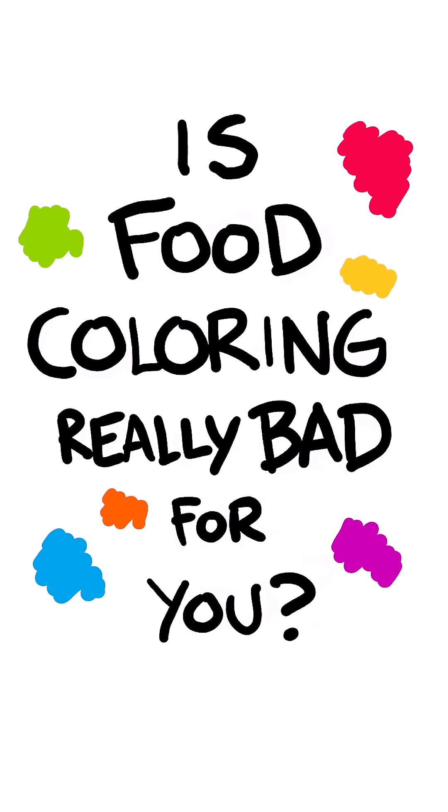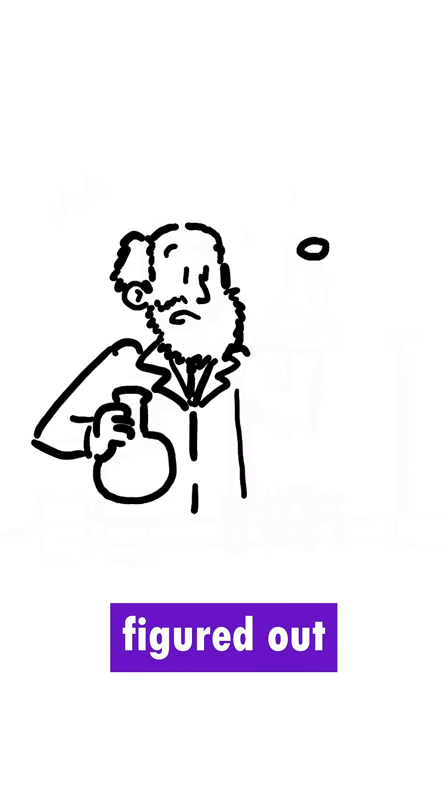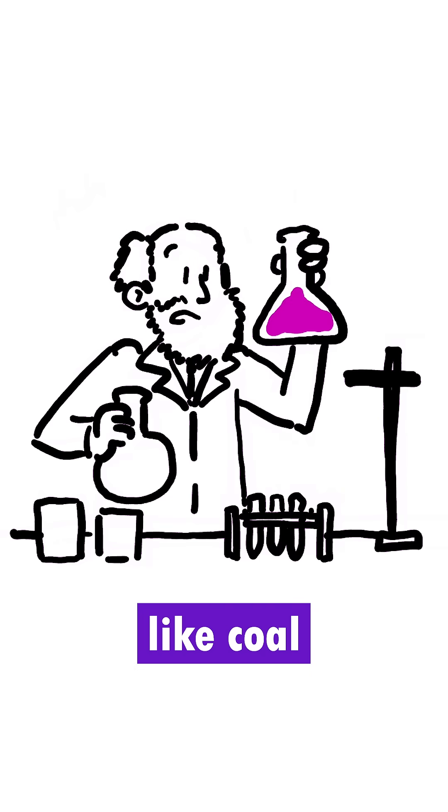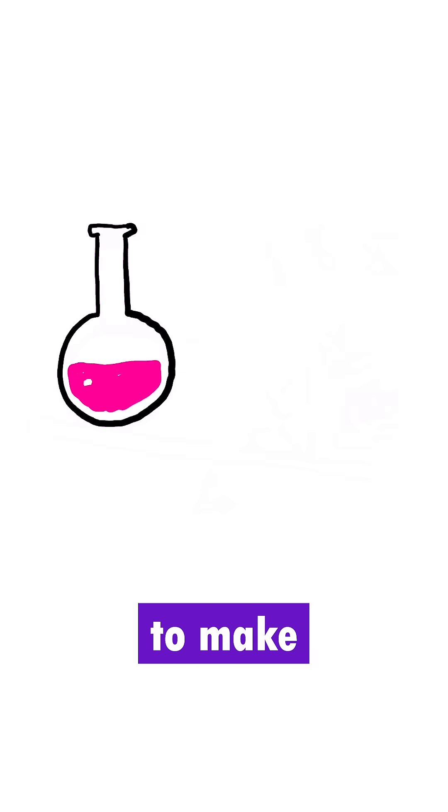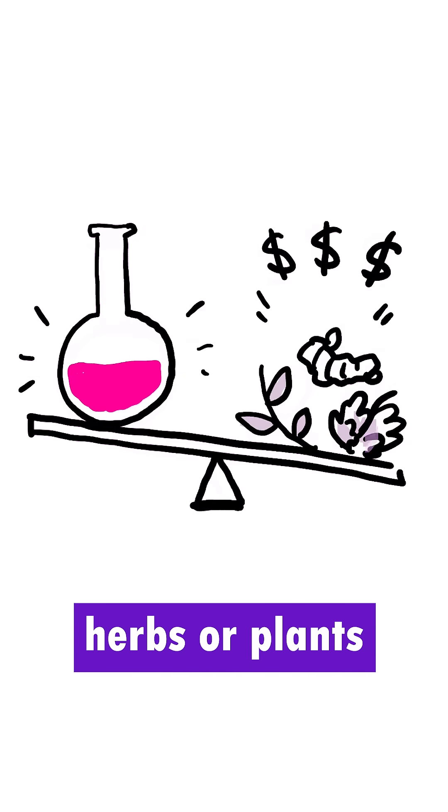Is food coloring really bad for you? In the 1850s, chemists figured out they could make food dyes from chemicals like coal tar and petroleum. They were cheaper to make than natural dyes made from herbs or plants.